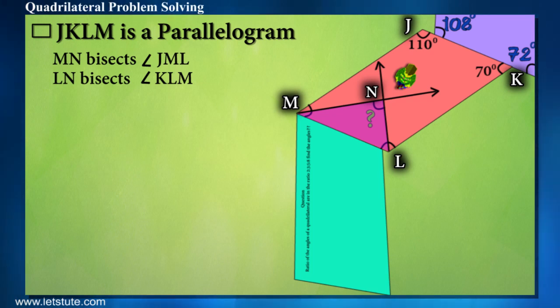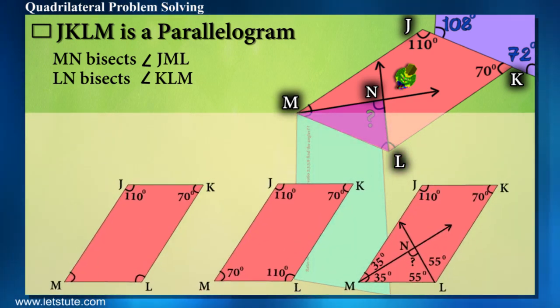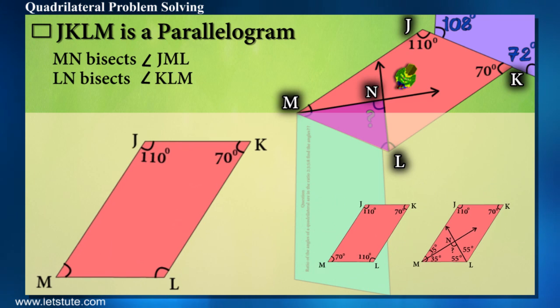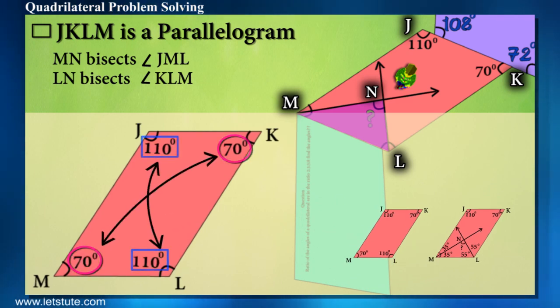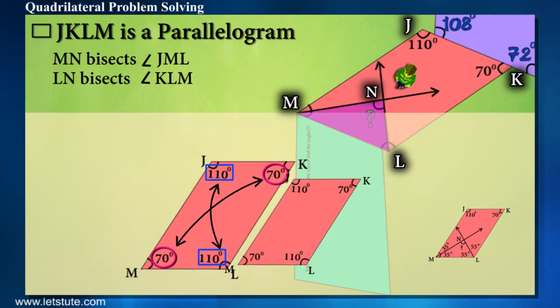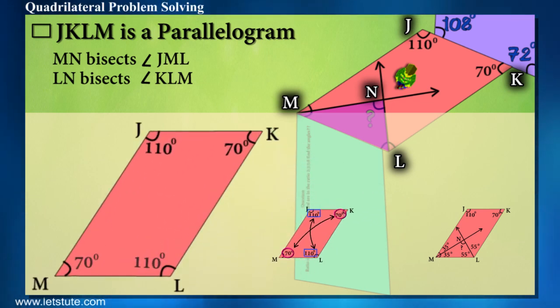Jack did it smartly. Here are some pictures. Just see them and tell whether you were also thinking on same lines or not. In the first picture you can see that it's a parallelogram, so opposite angles will be equal. In the second picture, due to angle bisector, angles will be equally divided.